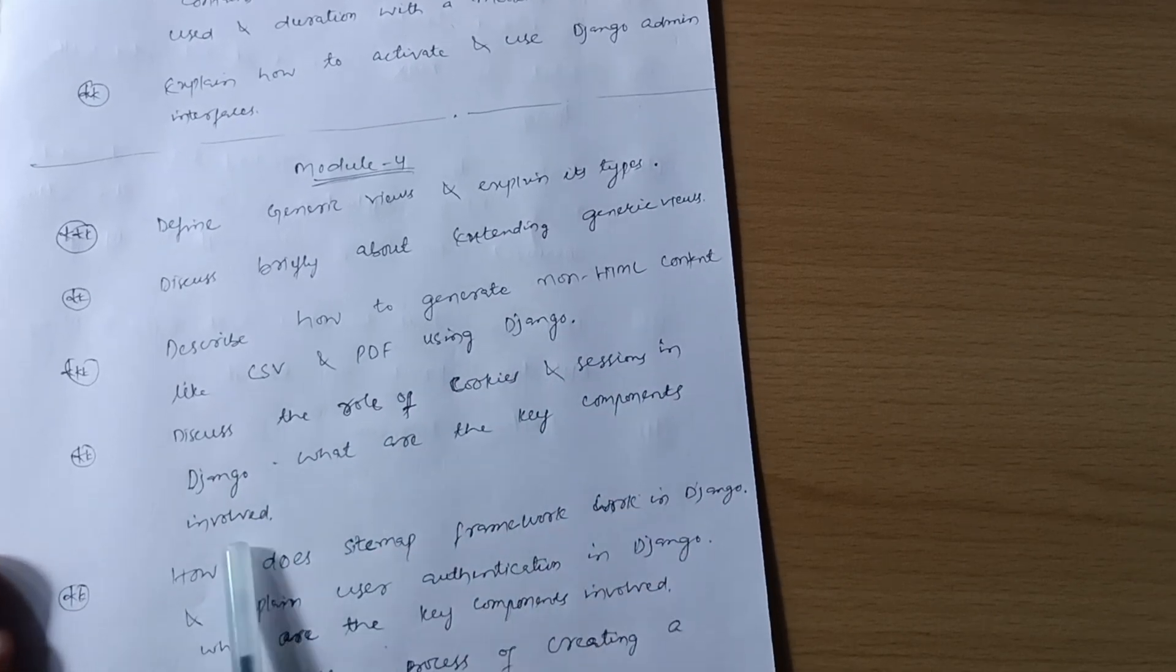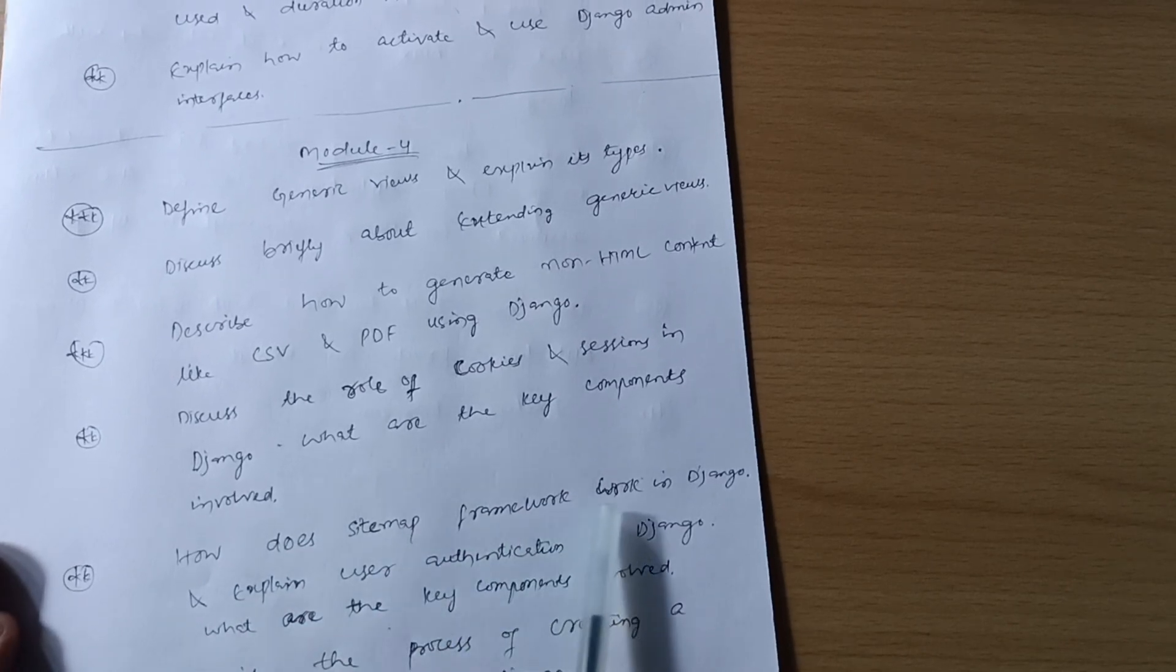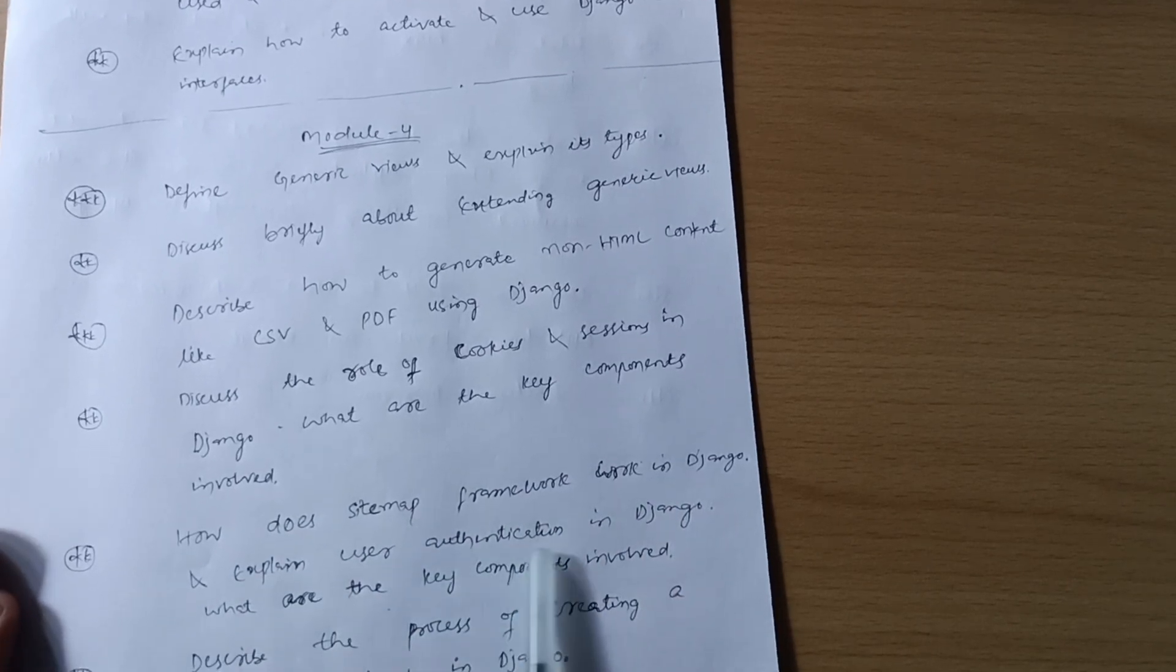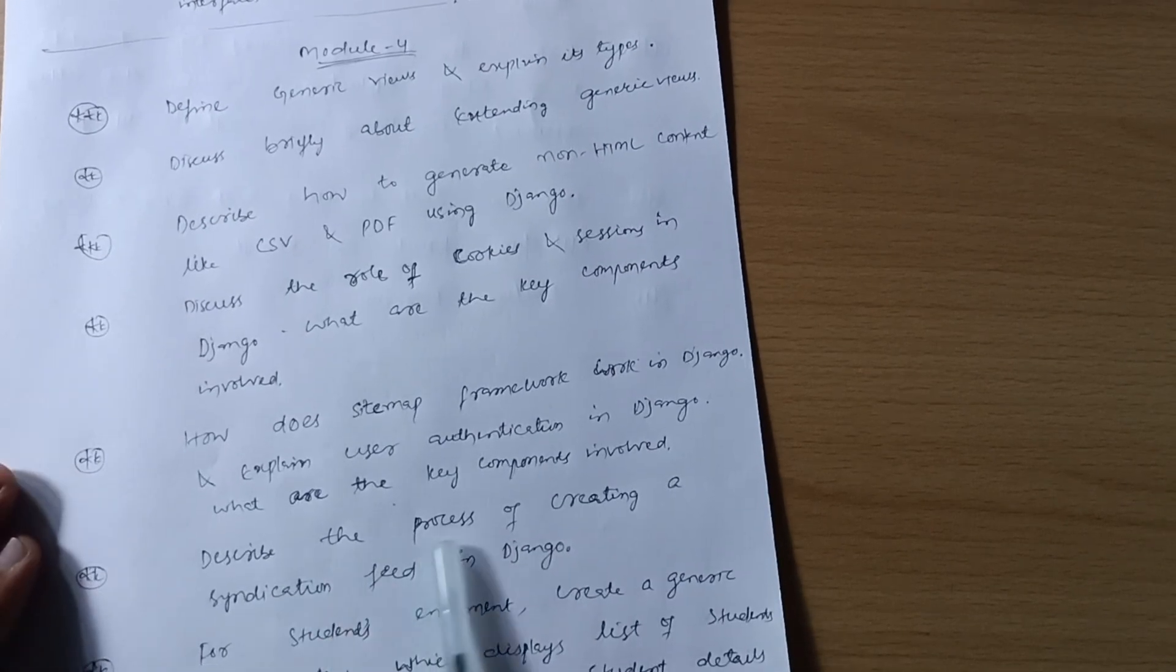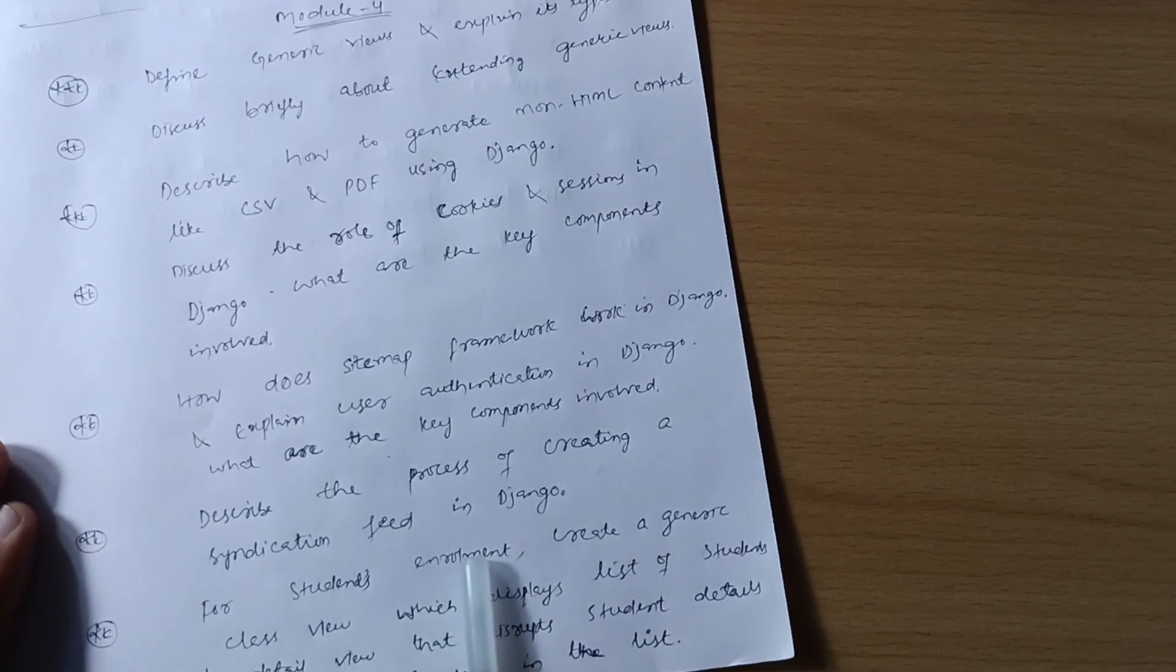Discuss the role of cookies and sessions in Django. What are the key components involved and how does sitemap framework work in Django? Explain user authentication in Django. What are the key components involved? Describe the process of creating a syndication feed in Django.